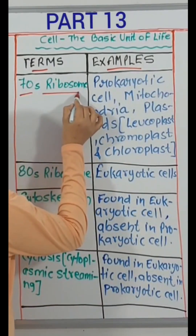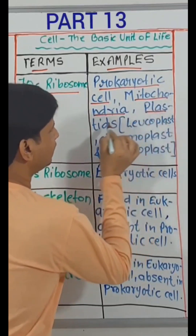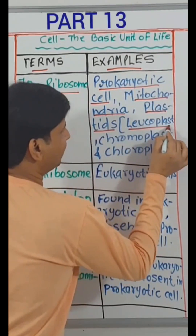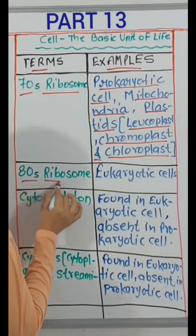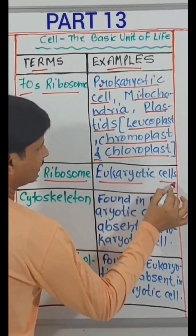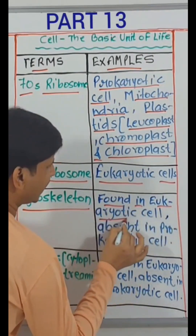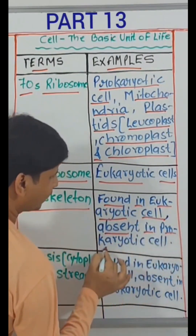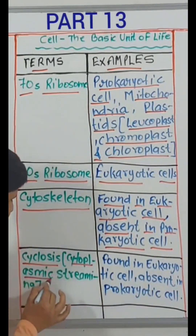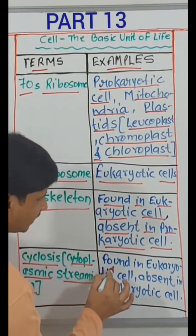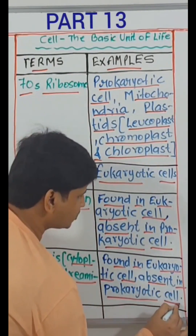70S ribosome — prokaryotic cell, mitochondria, plastids (that is leucoplast, chromoplast and chloroplast). 80S ribosome — eukaryotic cells. Cytoskeleton — found in eukaryotic cell, absent in prokaryotic cell. Cyclosis, that is cytoplasmic streaming — found in eukaryotic cell, absent in prokaryotic cell.